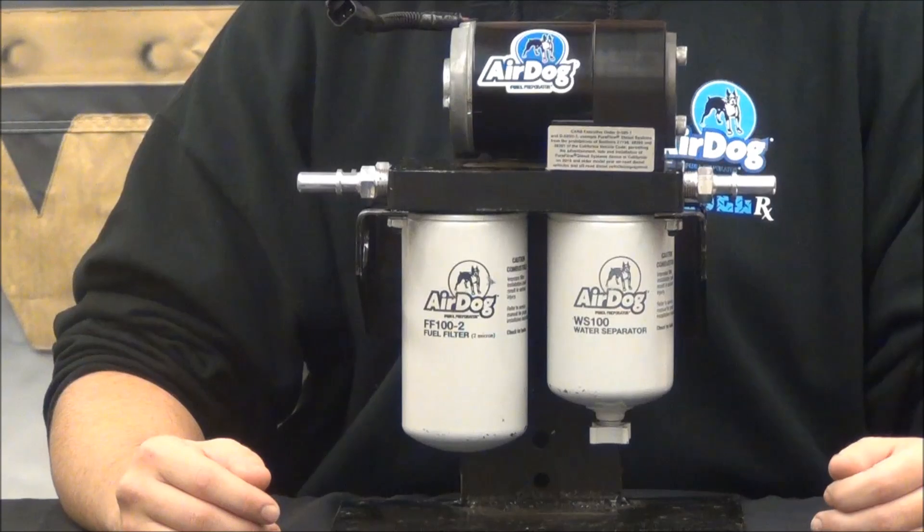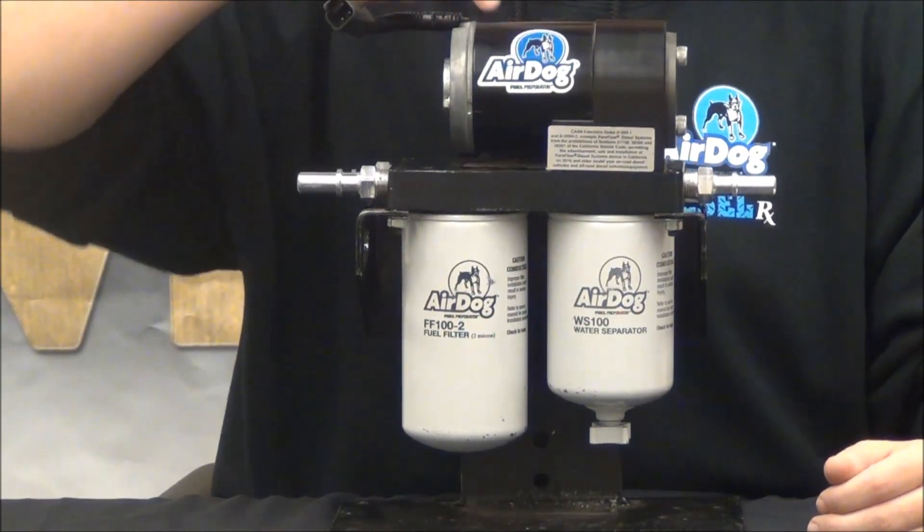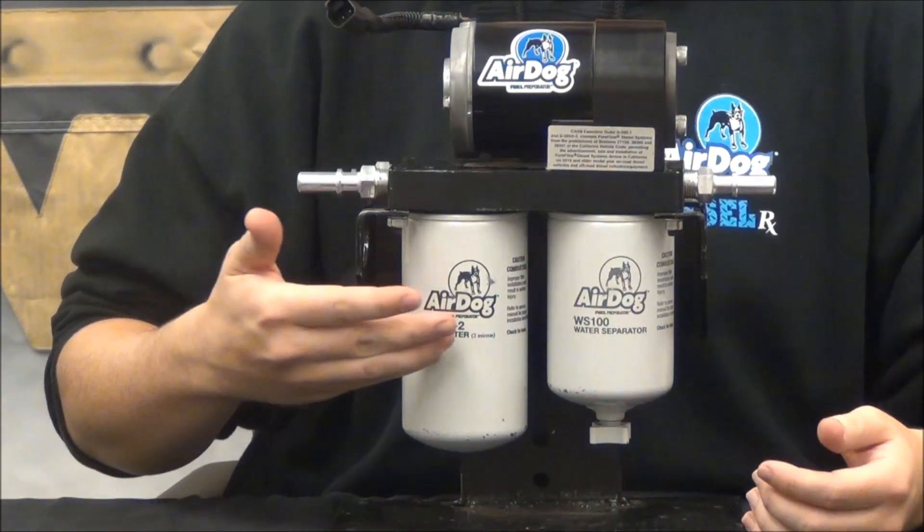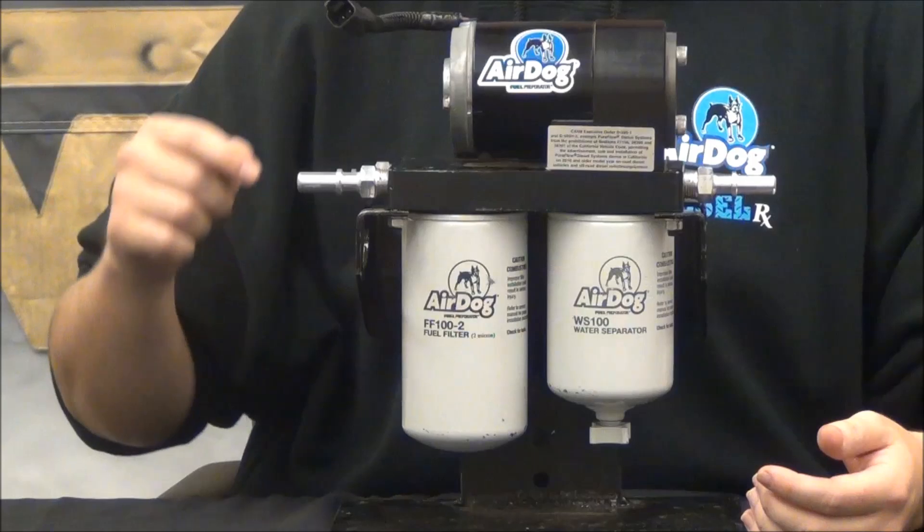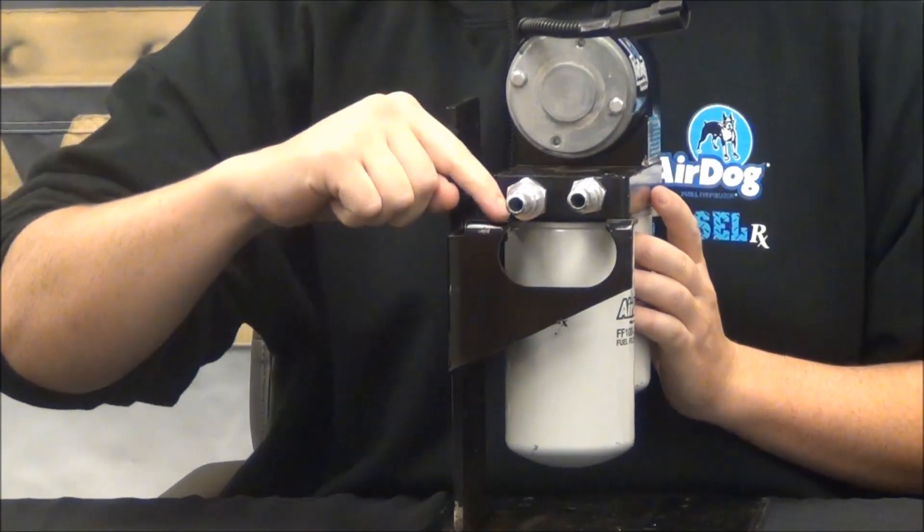First I want to talk to you about our first generation AirDog, the original fuel air separation system. This pump filters out water, particulates down to 2 micron, and separates air from the fuel. The separated air vapor is returned to the tank through the port labeled tank.